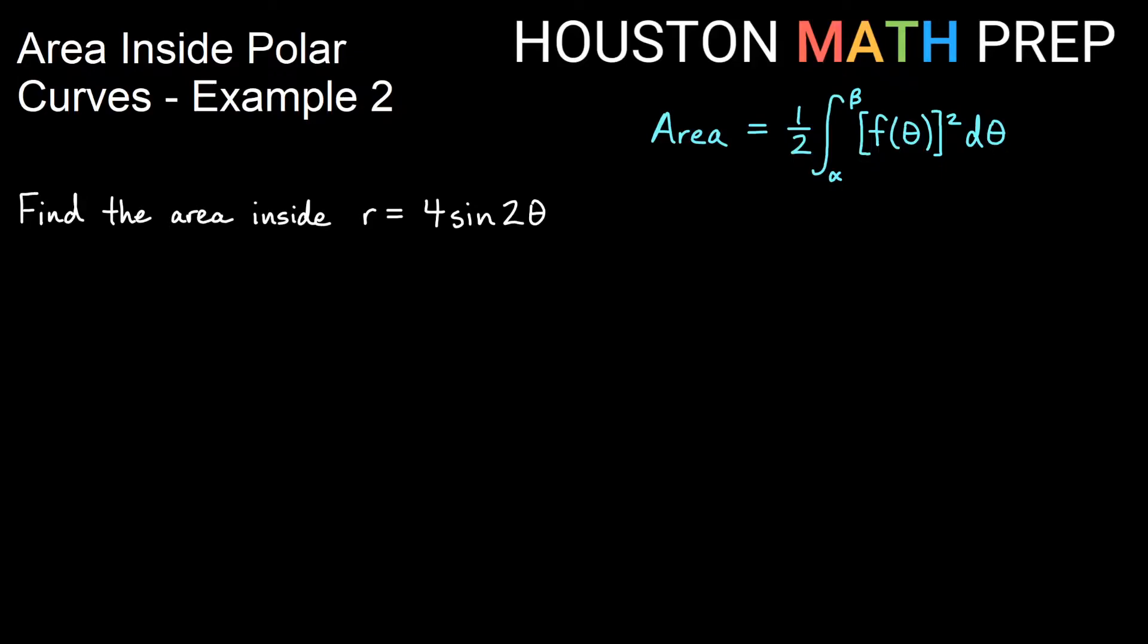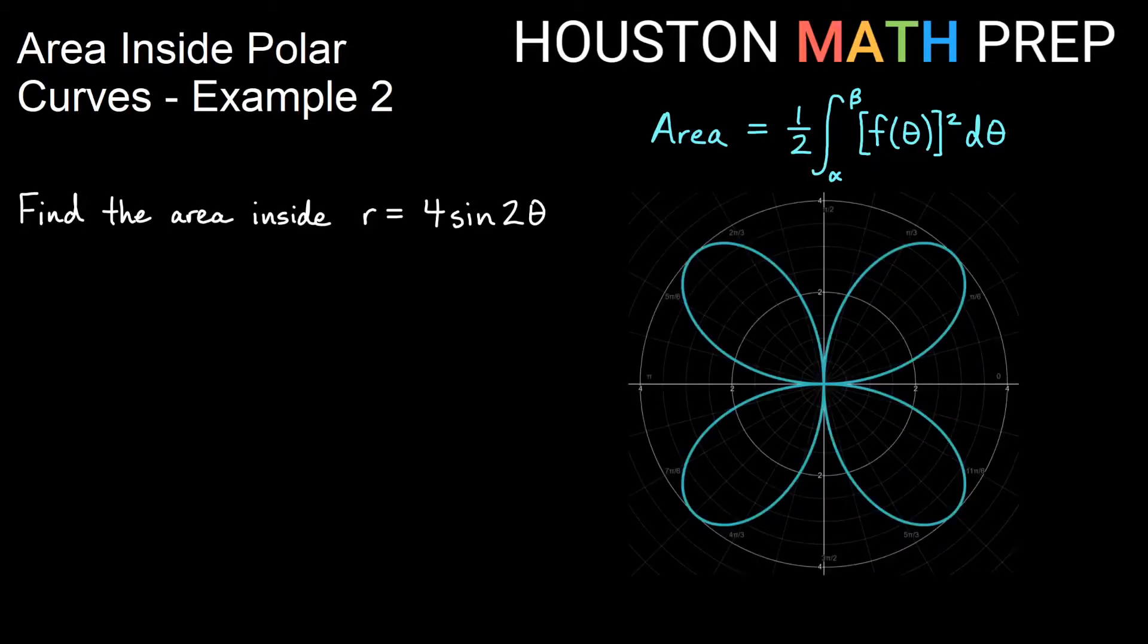Here we want to find the area inside of the curve r equals 4 sine 2 theta. I've got my graph here so we have four petals on this flower shaped graph. I've got my formula here, the area equals one half the integral from alpha to beta function of theta squared d theta.